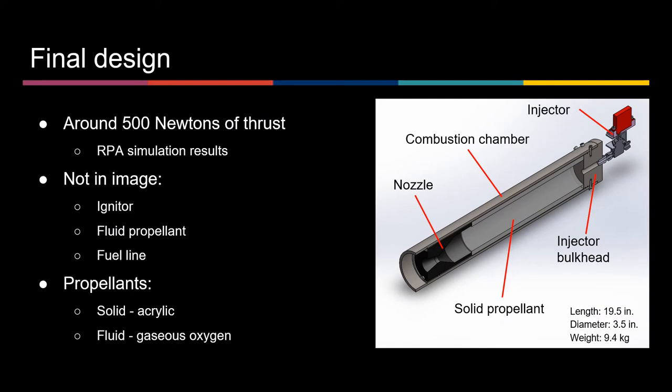Our final design is expected to produce around 500 Newtons of thrust. This number was obtained from simulations done with rocket propulsion analysis. We are using acrylic as our solid propellant and gaseous oxygen as our fluid propellant. The image here shows several of the main components of the project: the combustion chamber and the injector bulkhead, the nozzle, the injector, and the acrylic tube.